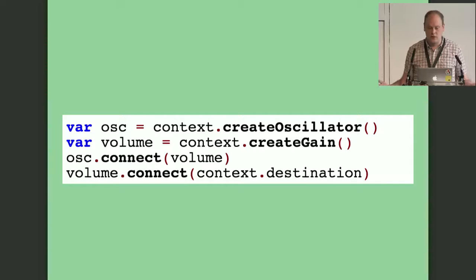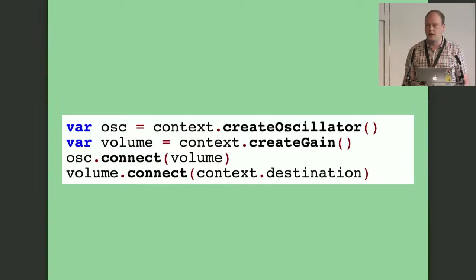Here's how we declare that graph in code. It's very declarative. The context has a constructor called create oscillator and another for the volume control called create gain. We connect the oscillator to the volume control, and connect the volume control to the destination. That's the code you'd write in the console, and this is what it sounds like.